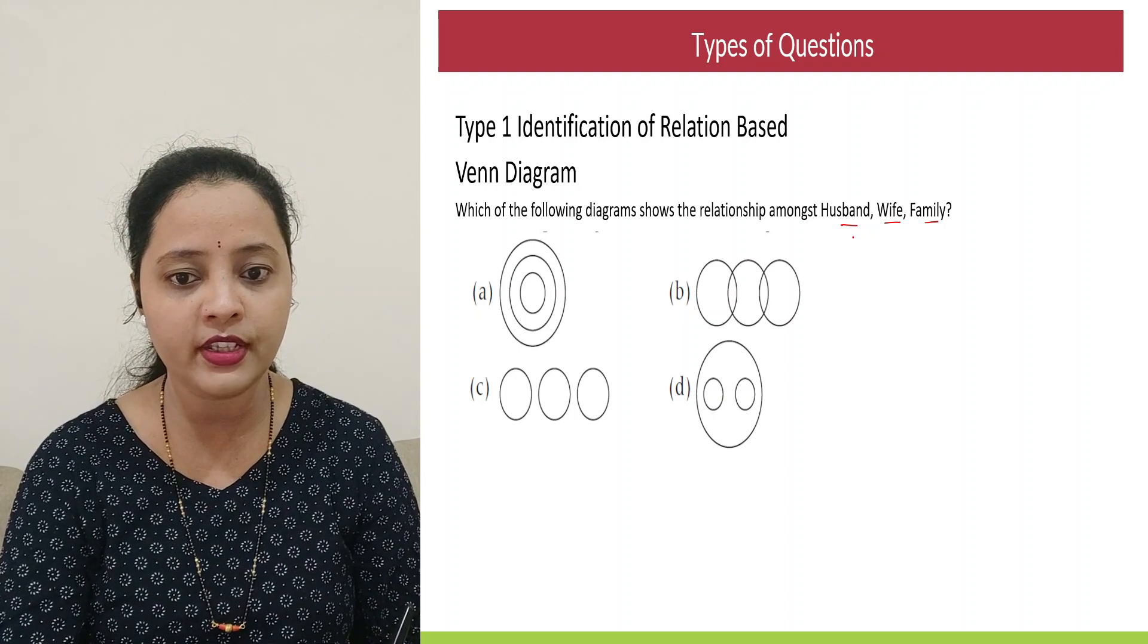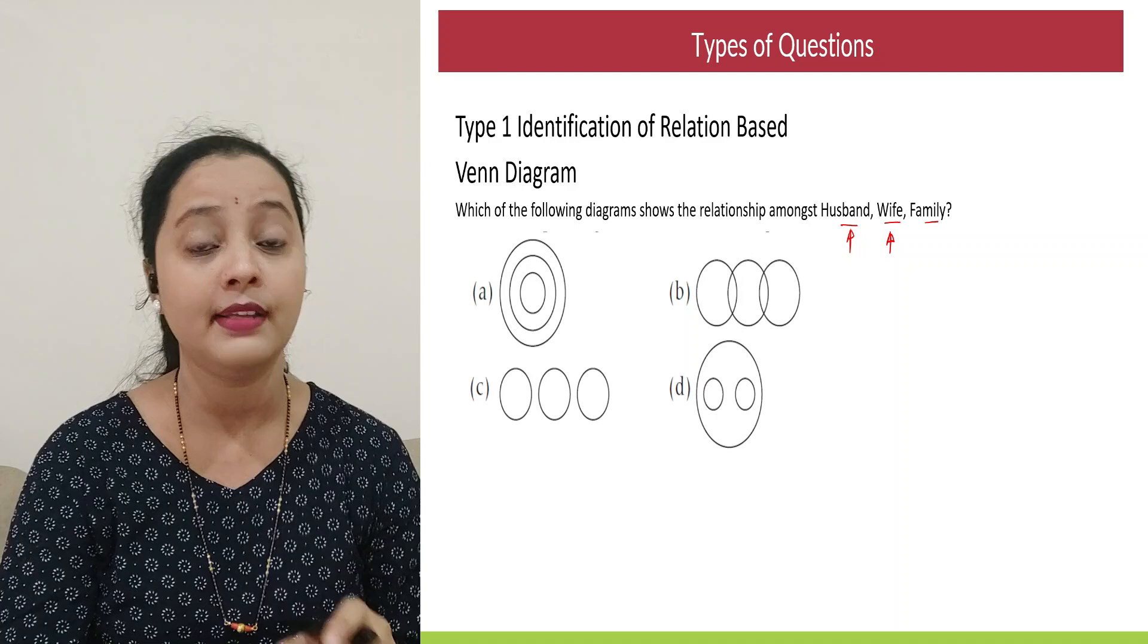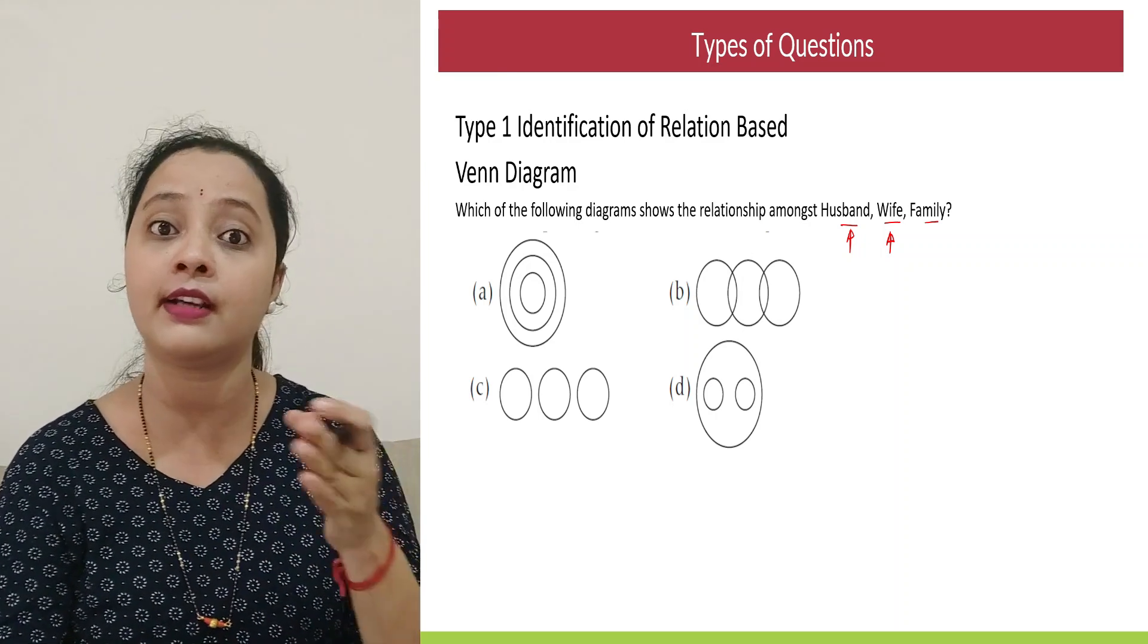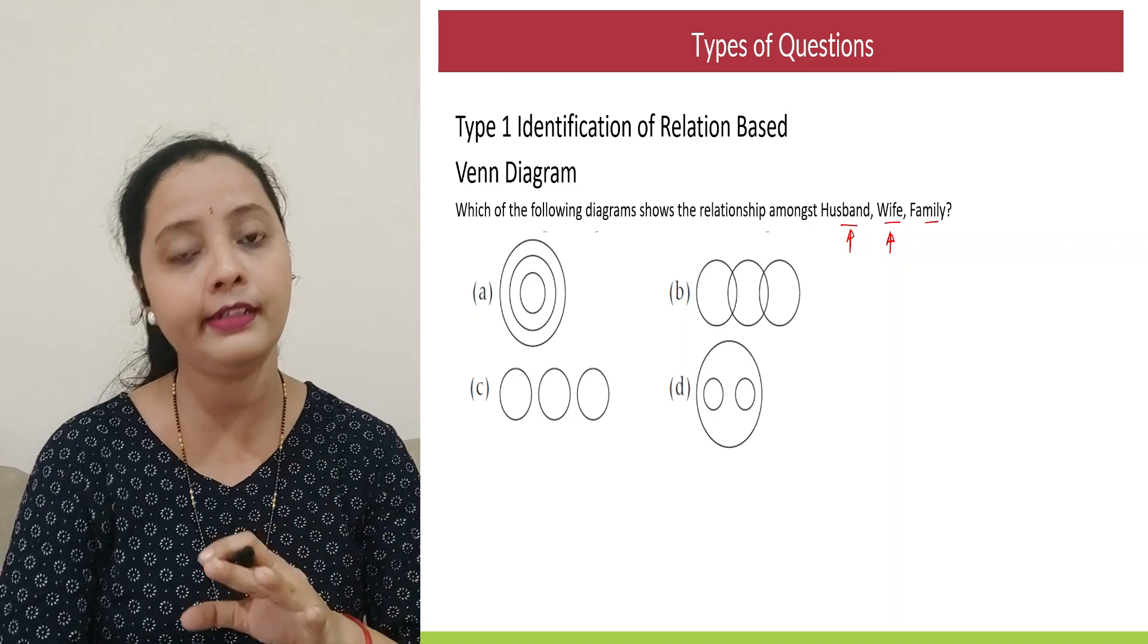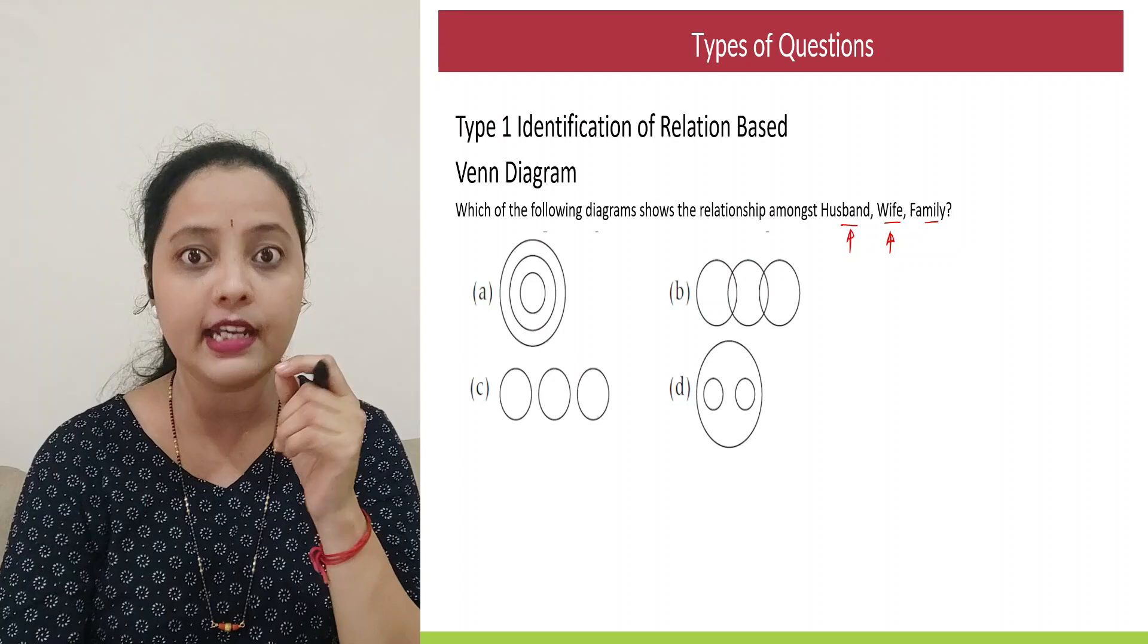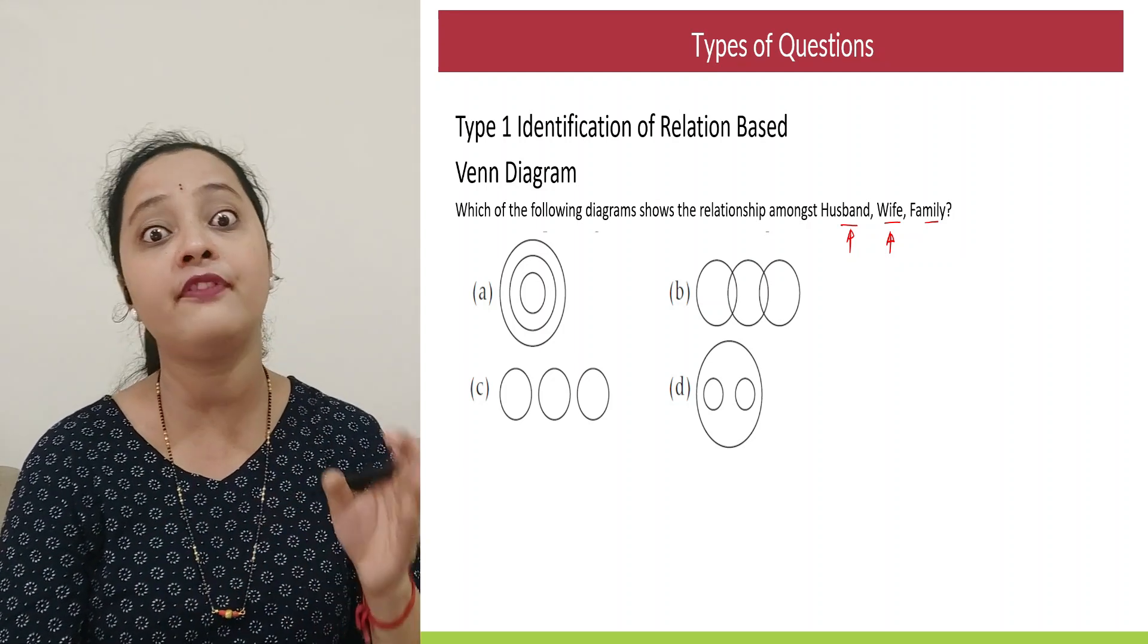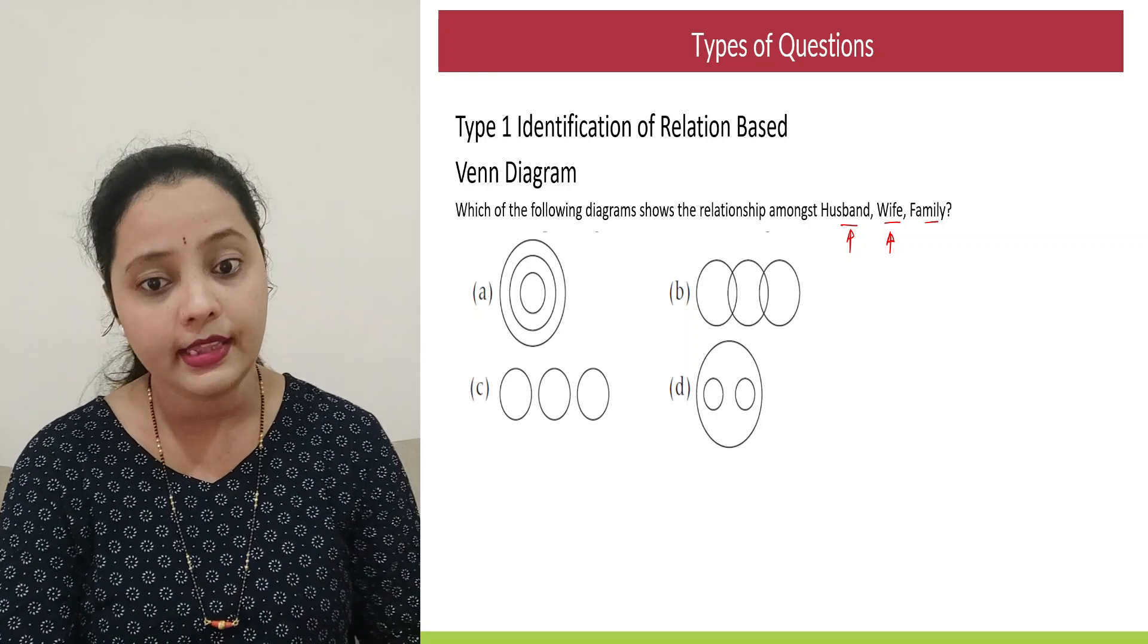So if I look with husband and wife, obviously husband and wife, it's a couple. They are related with one another, but can they be into one another? Can a husband be a wife or a wife be a husband? No. So though they are related with one another, they are not connected. And if you see in the options, it's based on circle. So will I have overlapping circles for husband and wife? Impossible. Will I have intersecting circles for husband and wife? No.